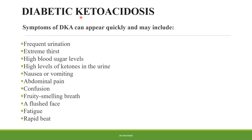Next is diabetic ketoacidosis. Symptoms include frequent urination, extreme thirst, high blood sugar levels, high levels of ketones in the urine, nausea or vomiting, abdominal pain, confusion, fruity smelling breath, a flushed face, fatigue, and rapid heartbeat.